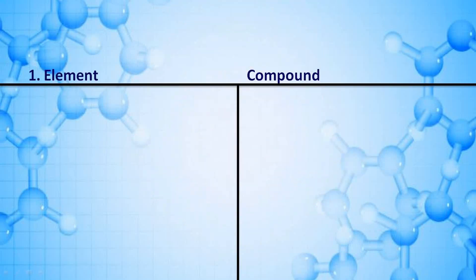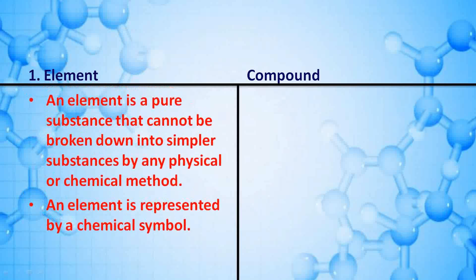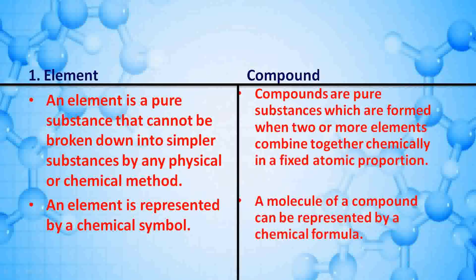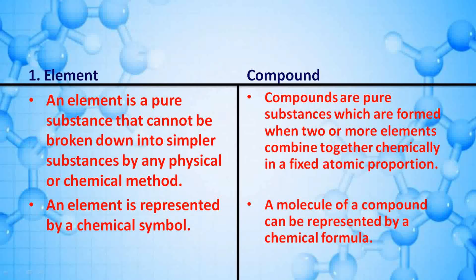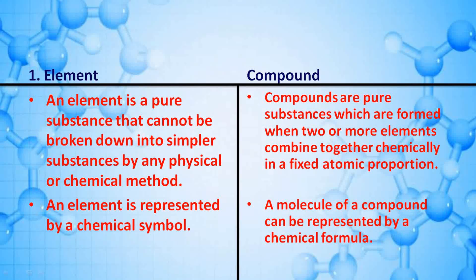Distinguish between element and compound. An element is a pure substance that cannot be broken down into a similar substance by any physical or chemical method; it is represented by a chemical symbol. A compound is a pure substance formed when two or more elements combine chemically in a fixed atomic proportion; a molecule of a compound is represented by a chemical formula.